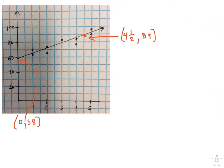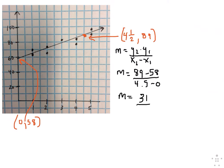Now we need the slope. The slope is y2 minus y1 over x2 minus x1. So the slope is 89 minus 58 over 4.5 minus 0. So the slope is 62 ninths.